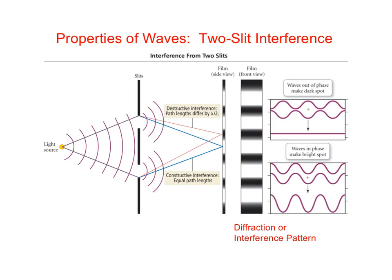Particles would not do this. If I had two baseballs or two machine guns and I fired them at a screen that could stop them, and they went through, I would see essentially two spots. The baseballs would either hit here or they would hit here. There wouldn't be this what we call diffraction pattern.